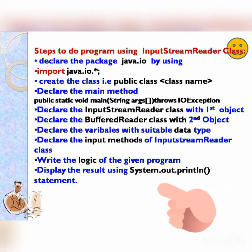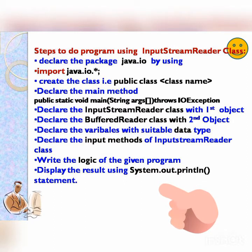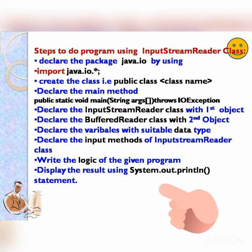Second, create the class — that is public class — and give the class name. Then declare the main method: public static void main(String[] args). Then add throws IOException, where IOE is capital letter. Then declare the InputStreamReader class with the first object, and the BufferedReader class with the second object — so you have to create two objects. Then declare the variables with suitable data type, declare the input methods, write the logic, and display the results.